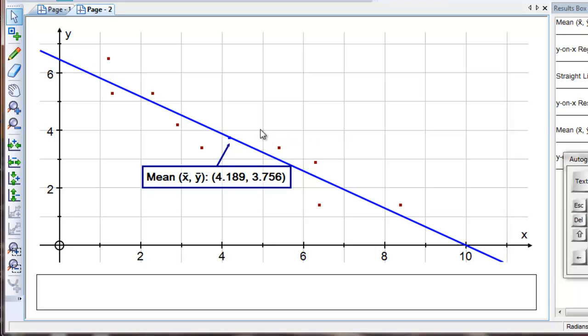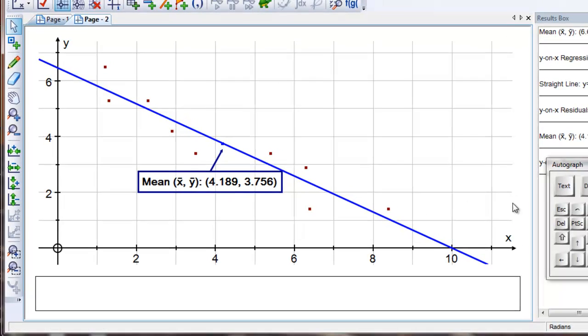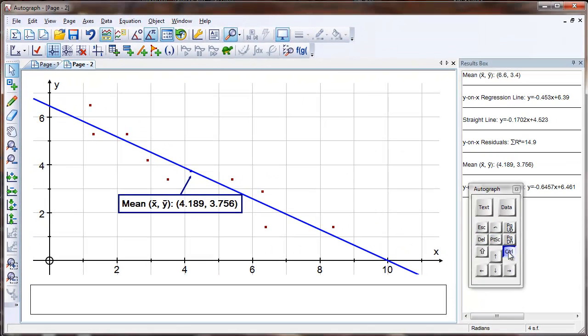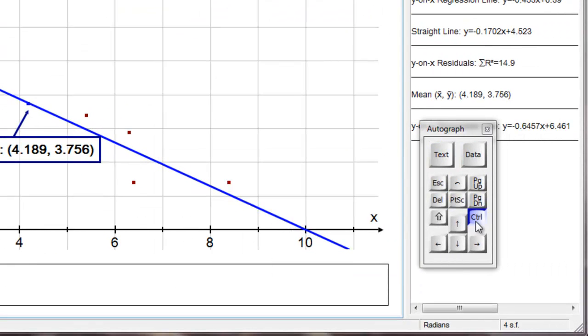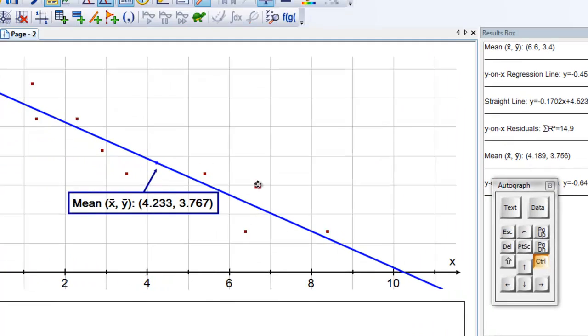Let's establish one or two things. First of all, these points can't be moved around because they all belong to a single object. So if you press the Ctrl key on the on-screen keyboard, it stays down, and now I can pick the point up and move it around.